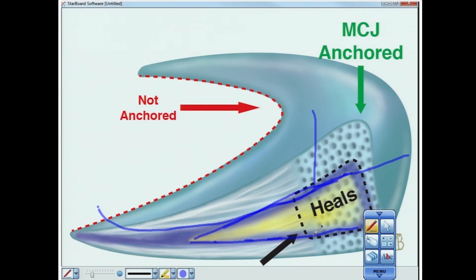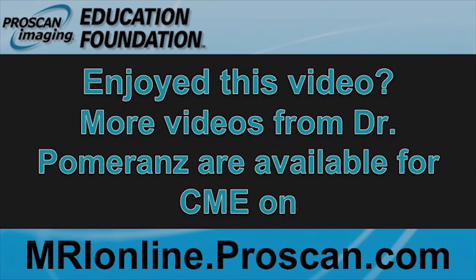Your primary job is to save the menisci. The slightest amount of trimming in the meniscus changes the knee dynamics forever for that person's entire life — it is a total game changer. So the worst thing you can do is call something that is not there.